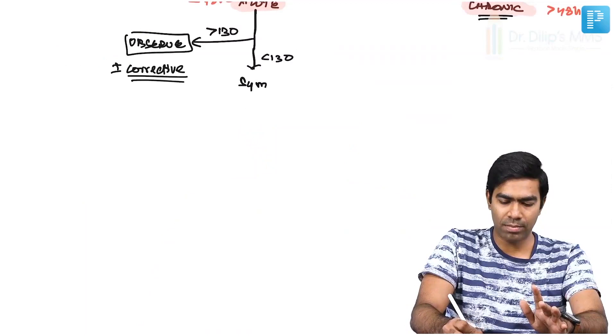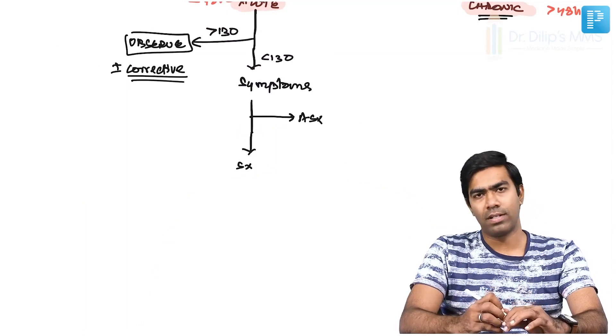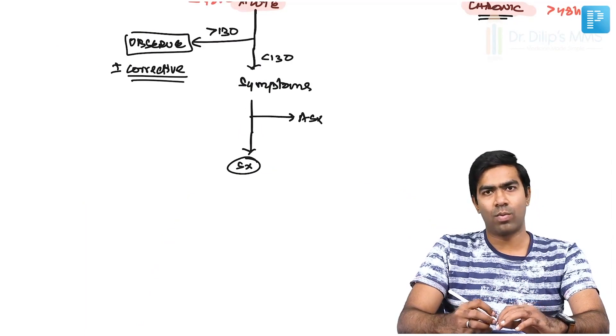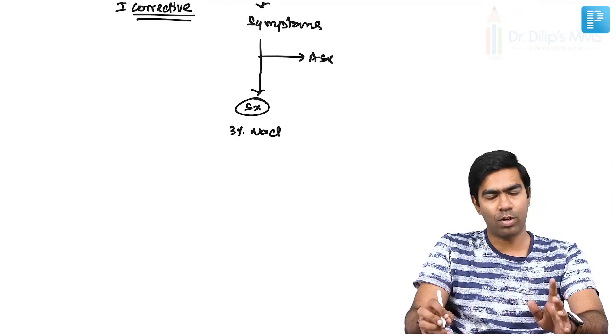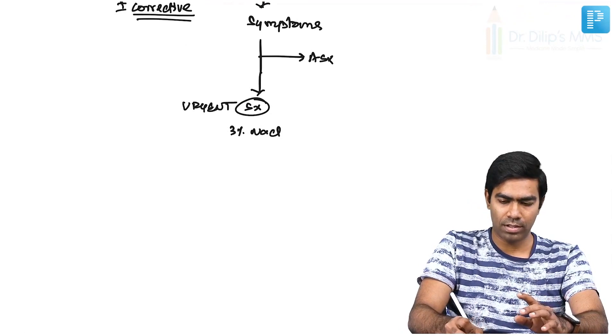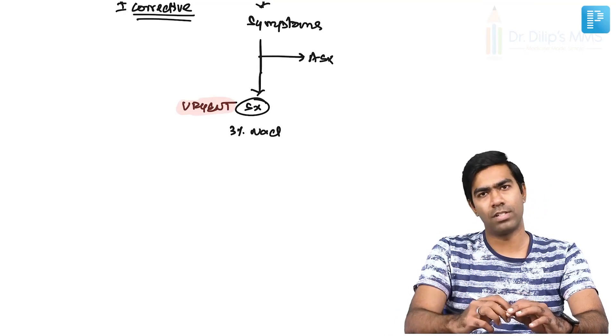If the sodium is less than 130 and it is acute — acute cases are more dangerous in developing symptoms because the body does not tolerate acute changes easily. So for acute hyponatremia less than 130, see whether the patient is symptomatic. If the patient is symptomatic, immediately give 3% NaCl — that is hypertonic saline — because the treatment becomes urgent.